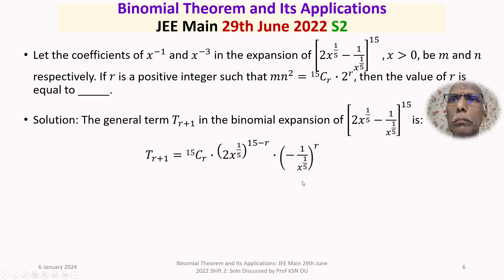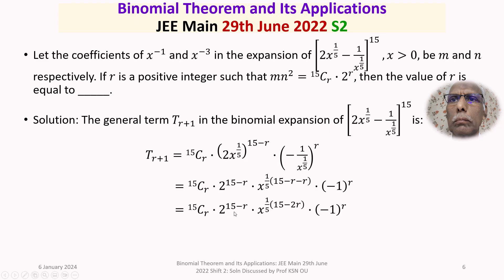Simplifying, this equals 15Cr · 2^(15-r) · x^((1/5)(15-r)) · (-1)^r · x^(-r/5). Combining the powers of x gives x^((1/5)(15-2r)). So the general term is 15Cr · 2^(15-r) · (-1)^r · x^((1/5)(15-2r)).